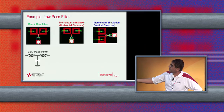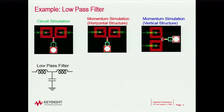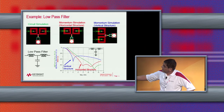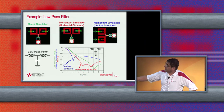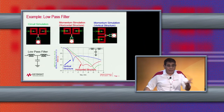When I saw that result, I built a simple low-pass filter with the horizontal structure and a capacitor, and the vertical structure with a capacitor, and simulated both with planar EM momentum simulation. Look at the results — the blue and red curves are the same exact circuit but laid out differently, horizontal versus vertical. At seven gigahertz the rejection is almost minus 60 dB for one and only minus 30 dB for the other. So the way you lay out your circuit makes a big difference if you want to reject harmonics.